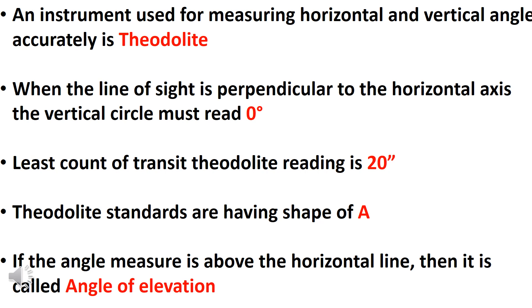When the line of sight is perpendicular to the horizontal axis, the vertical circle must read zero. The least count of transit theodolite reading is 20 seconds.